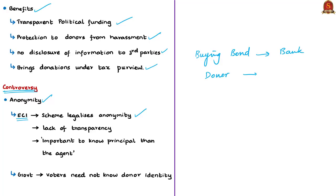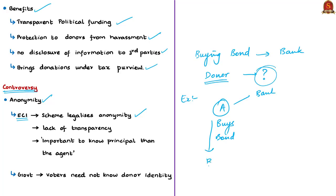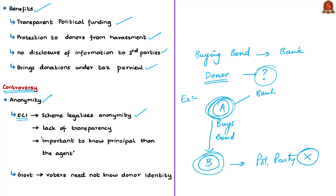Electoral bonds are bearer bonds, which creates this anonymity. Additionally, a person who buys the bond can give it to another person, and if that person donates it to the political party, there will be no record of the person who received it from the original buyer. For example, if person A buys the bond from the bank, the bank has information about person A. But if person B buys the bond from person A and donates it to political party X, the bank will have no information about person B. This brings anonymity to a different level, which is why many suggest that the details of the actual donor should be known.